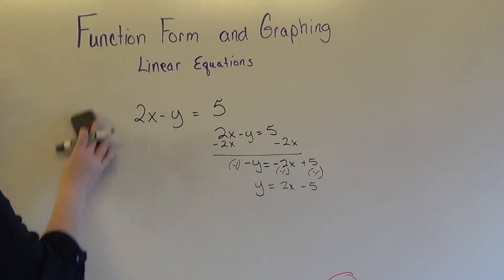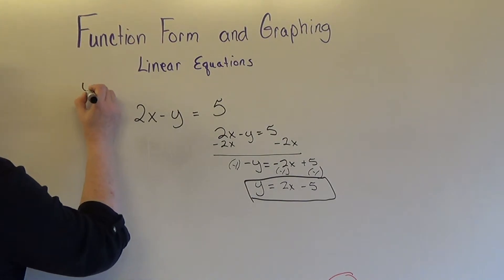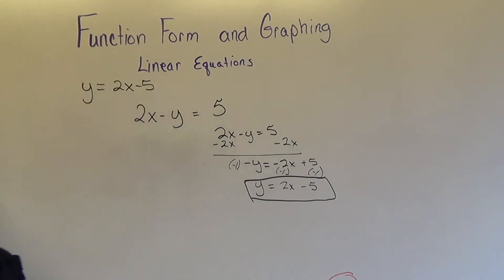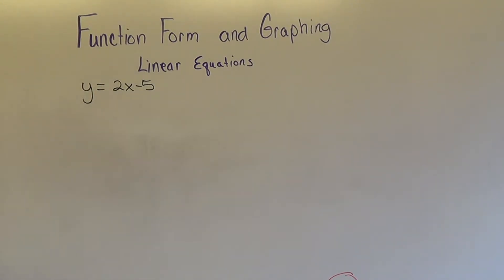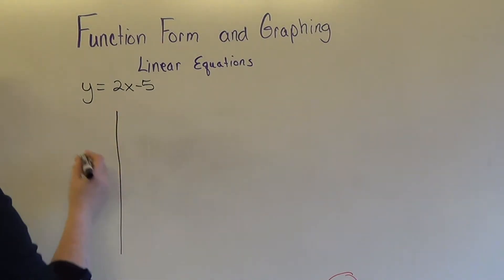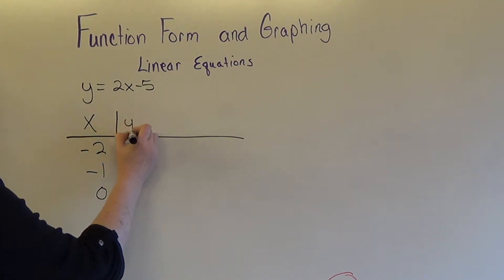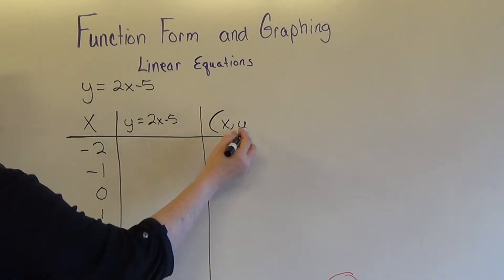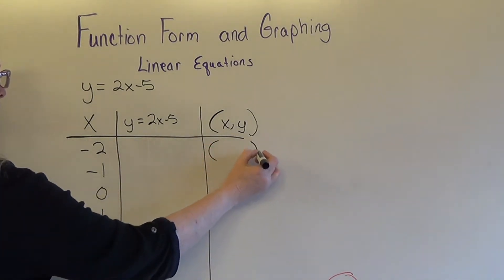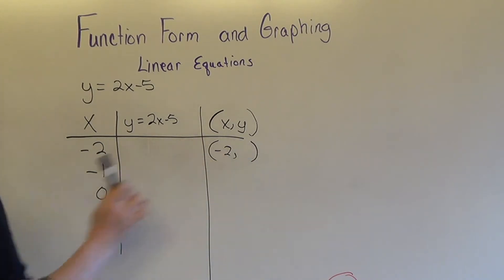Let me show you the way they're going to have you start graphing this. I've got it in function form — y equals 2x minus 5 — so I'm going to make a quick table. We're going to pick values for x. When they first teach you this, they ask you to use negative 2, negative 1, 0, 1, and 2. You write your function form equation and plug each x value in to come up with the y coordinate, giving you your ordered pair.